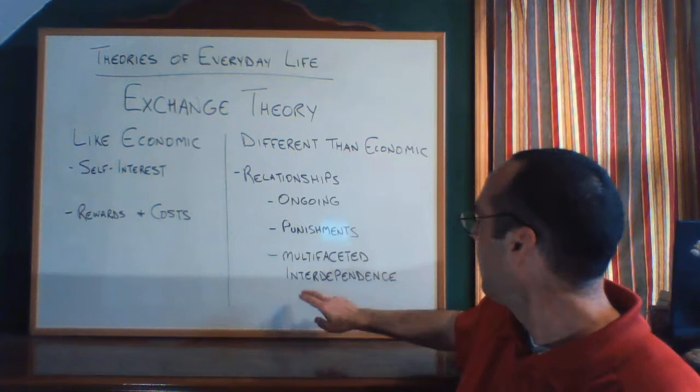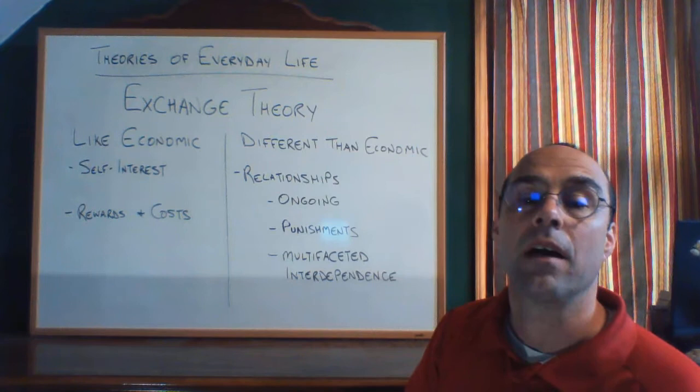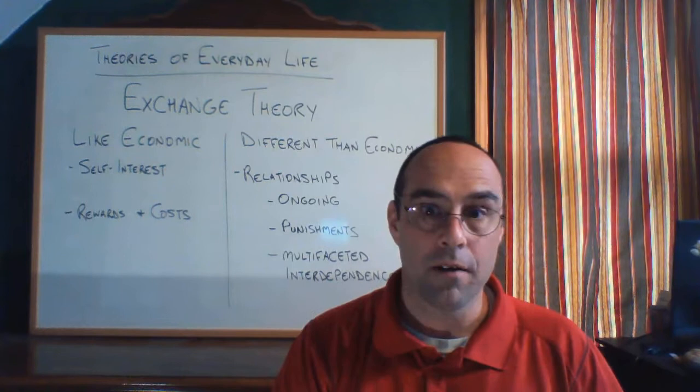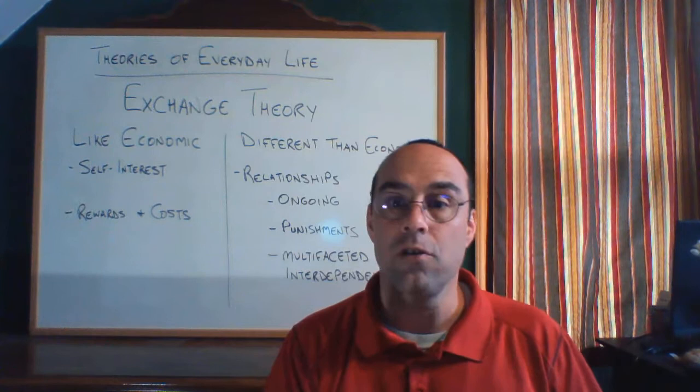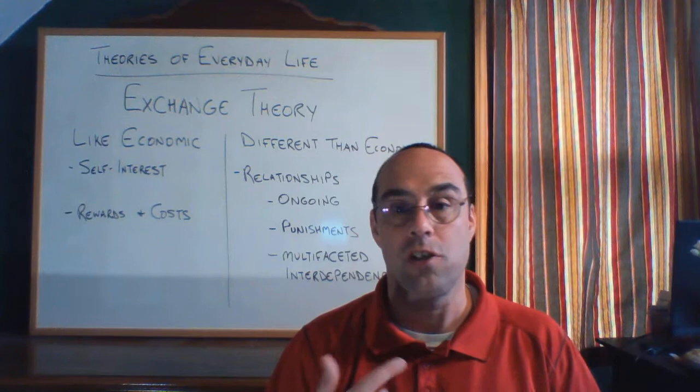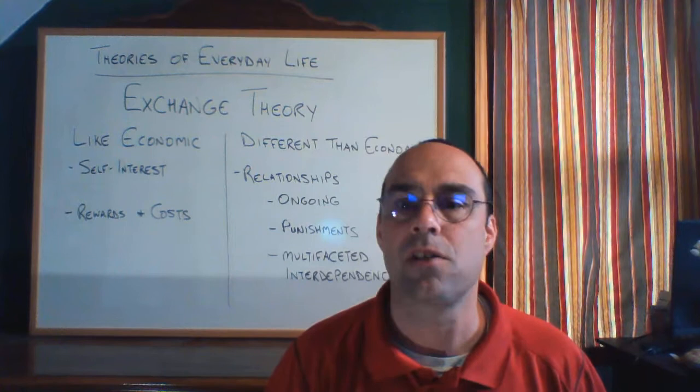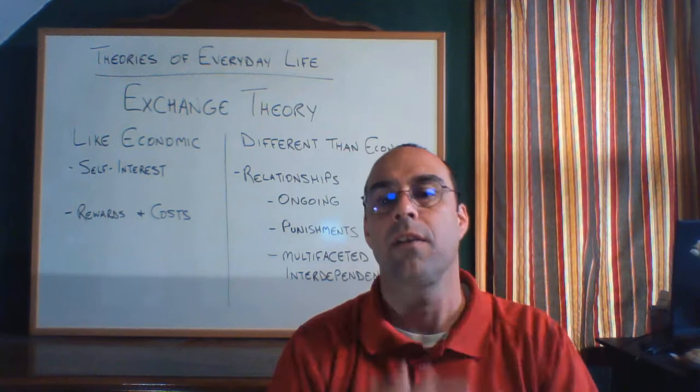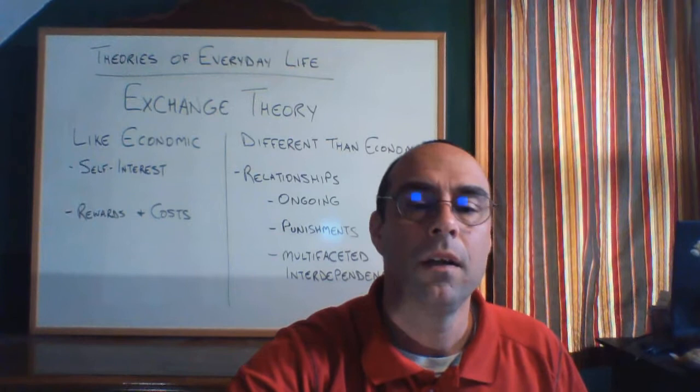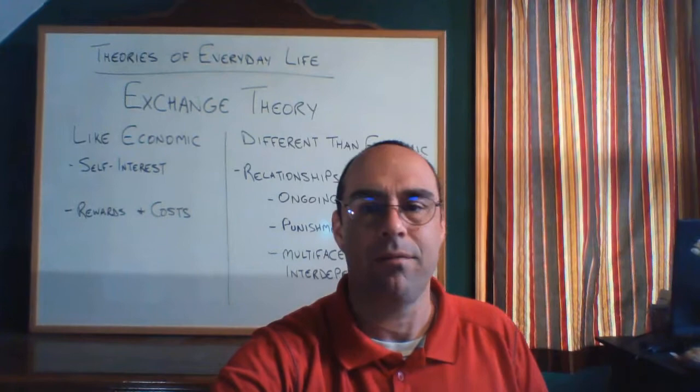And the third and probably the most important way is that there is multifaceted interdependence in a social relationship. So my relationship with the restaurant is I want food, you want money. It's one dimensional. But my relationship with my wife involves love and it involves support and it involves just enjoying each other's company. And there's all kinds of different elements to that. And that's what it means by our relationship is multifaceted. It's not just that one: I give you this and you give me that. There are all kinds of elements to our relationship. And that's what brings our interdependence together or that's what creates our interdependence. Our interdependence is multifaceted.